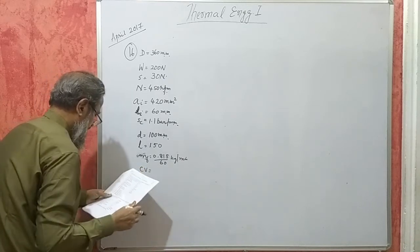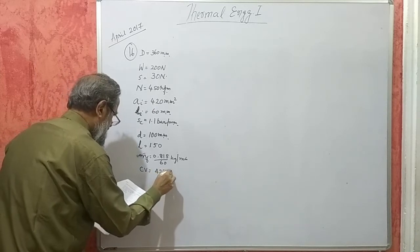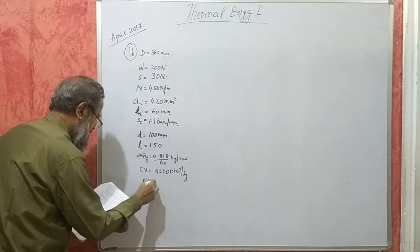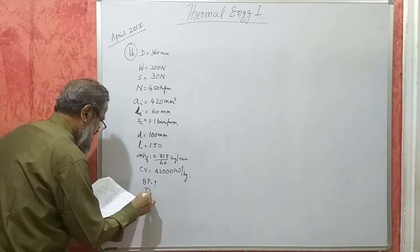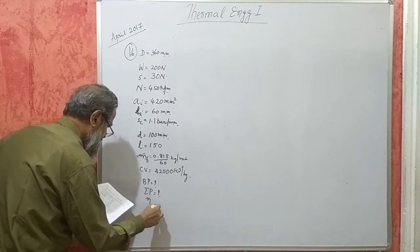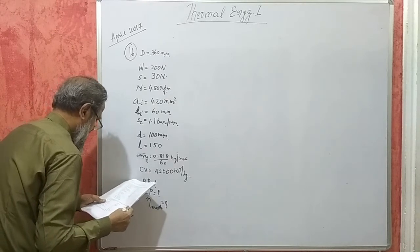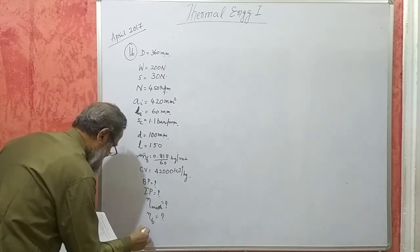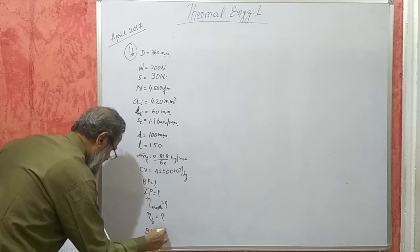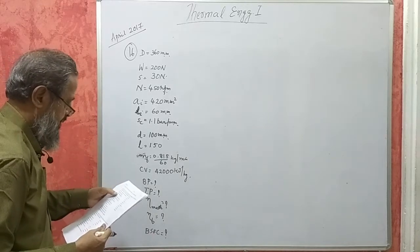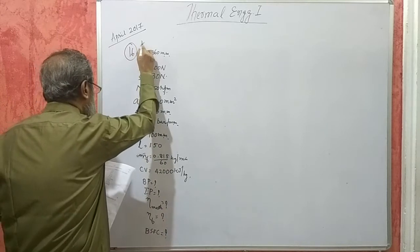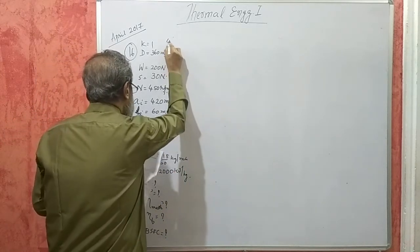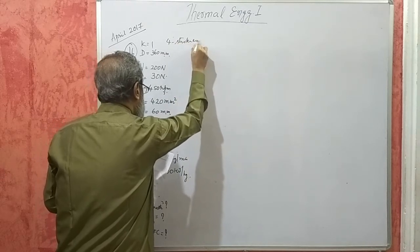Calorific value 42,000 kilojoules per kg. Find BP, IP, mechanical efficiency, brake thermal efficiency, and BSFC, that means specific fuel consumption on BP basis. During a test on a single cylinder working on 4 stroke cycle.